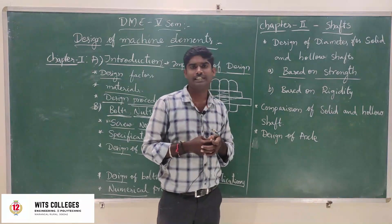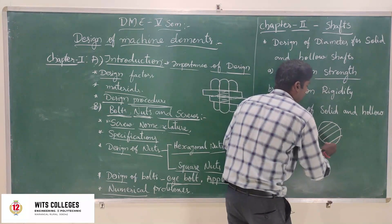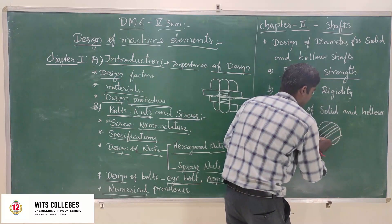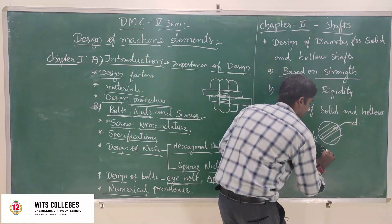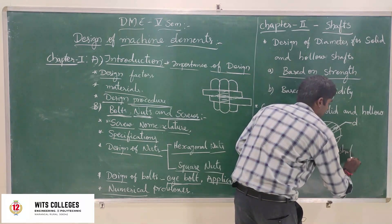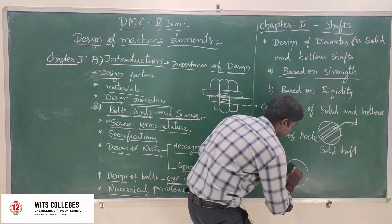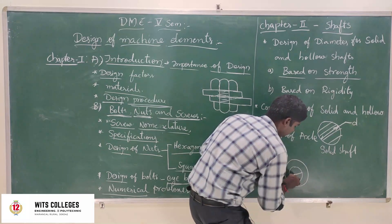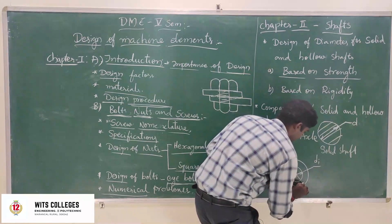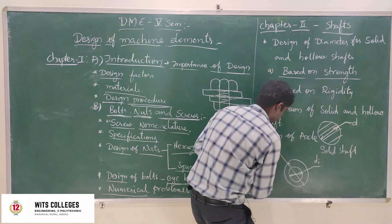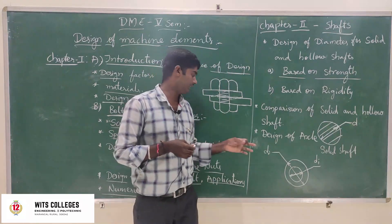One comparison: in a solid shaft, there is only one diameter. In a hollow shaft, there are two diameters — inner diameter and outer diameter. Inner diameter is denoted by Di, and outer diameter is denoted by D0.